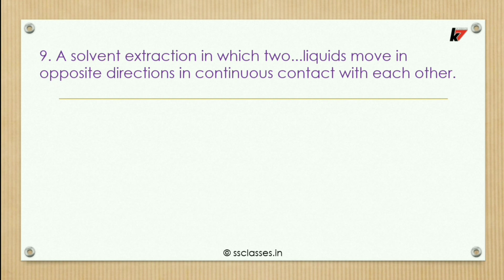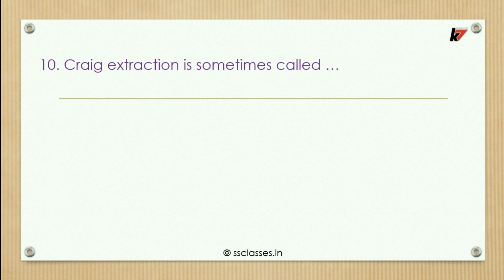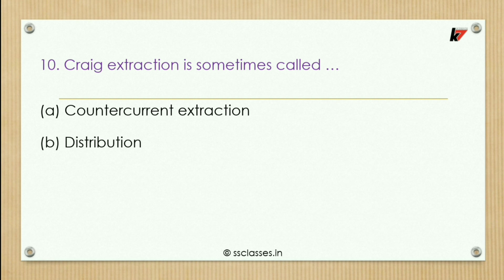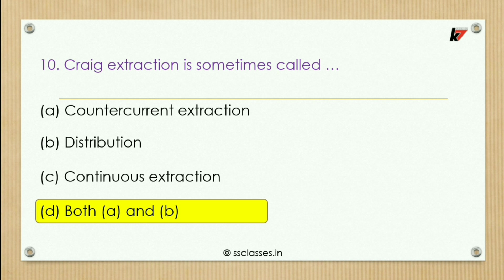Ninth question: a solvent extraction in which two liquids move in opposite directions in continuous contact with each other — what type of liquids? Options: immiscible, miscible, polar, or non-polar. The correct option is immiscible liquids. Tenth question: Craig extraction is sometimes called — options: counter current extraction, distribution, continuous extraction, or both A and B. The correct option is both A and B, because counter current extraction and distribution are the same name for Craig extraction.